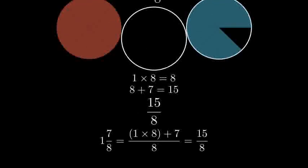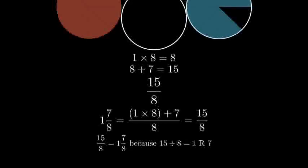We can verify this is correct because if we were to convert back to a mixed number, 15 divided by 8 equals 1 with a remainder of 7, giving us back our original mixed number of 1 and 7 eighths.